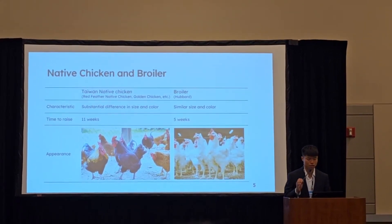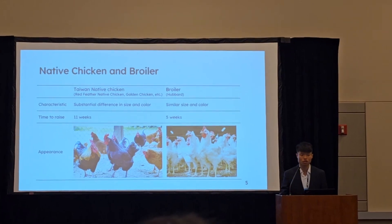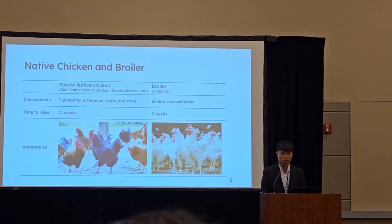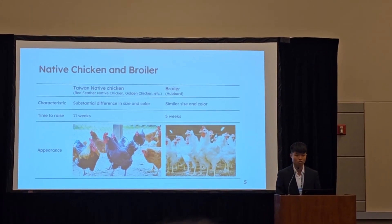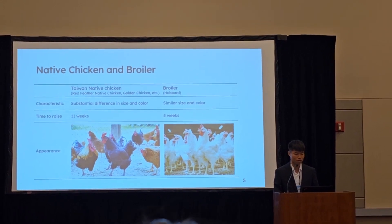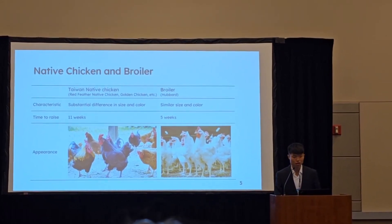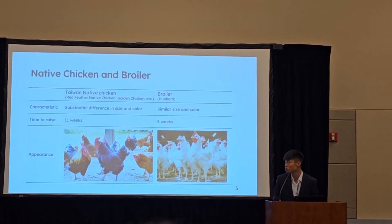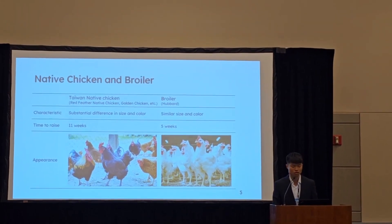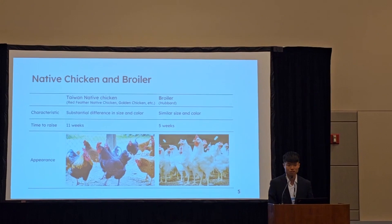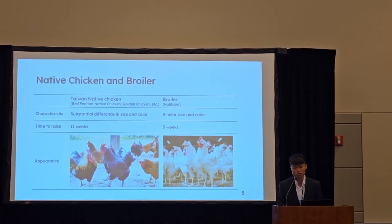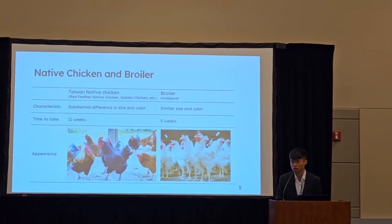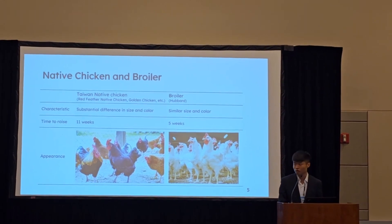Next I want to introduce the two types of chicken: the native chicken and the broiler. The Taiwan native chicken is an endemic species with a variety of breeds, like the red feather native chicken and golden chicken. In different breeds, they have substantial differences in size and color, as shown in the picture on the left. The broiler is a specific breed for the meat industry, so the breed is uniform — similar in size and color, looking all white, as shown in the right side picture.